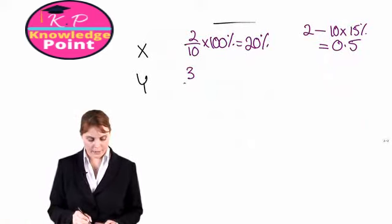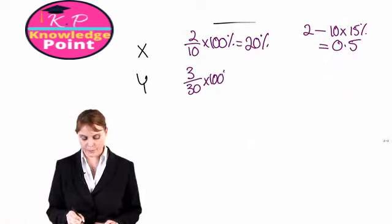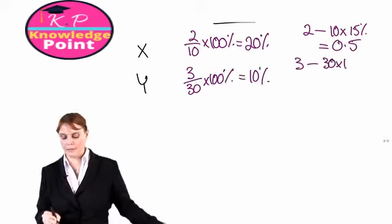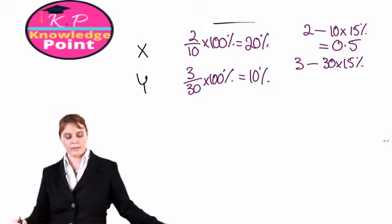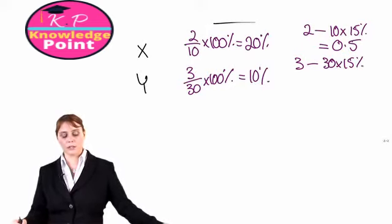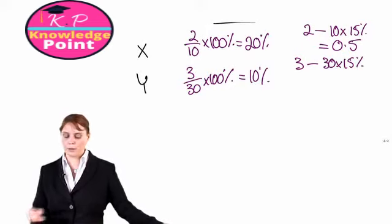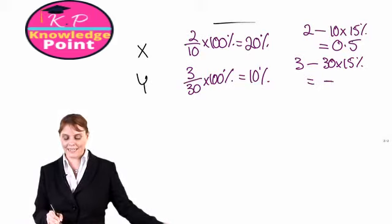Residual income, profit minus the investment multiplied by the required return. If you work this through, I think it's going to be bad news for department Y. Do we get a negative figure of -1.5?